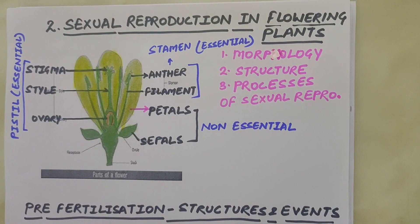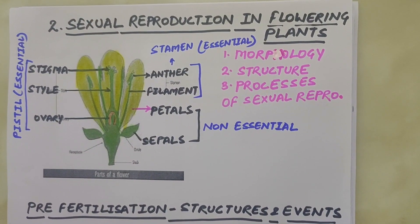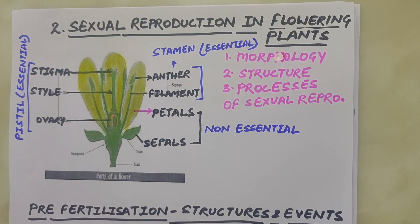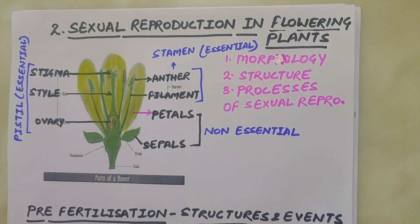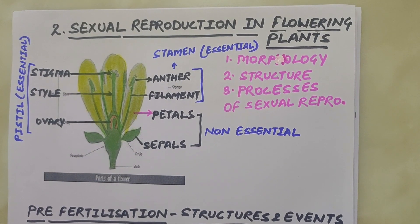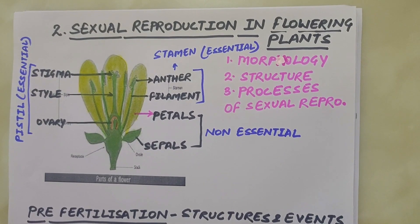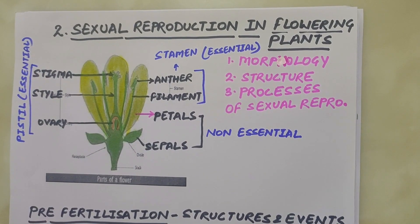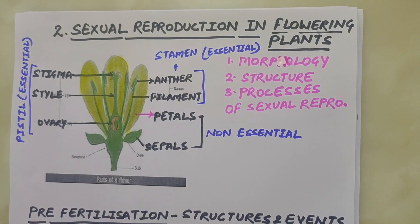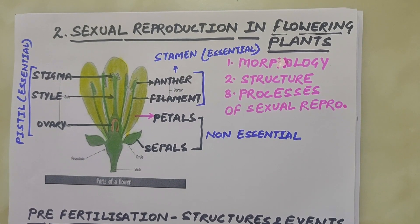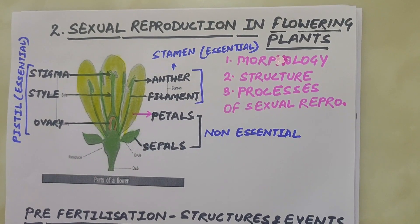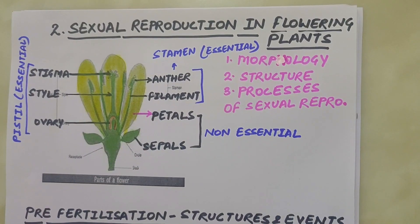Good morning everyone. Today we are going to discuss chapter 2 of class 12, that is sexual reproduction in flowering plants. All flowering plants show sexual reproduction. In this chapter, let us understand the morphology, structure and processes of sexual reproduction in flowering plants, that is in angiosperms. Let's have a look at the structure of the flower first.